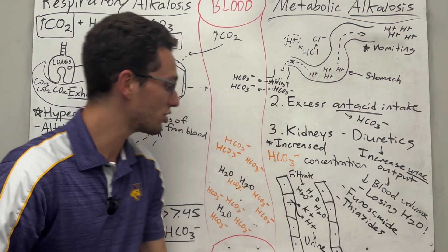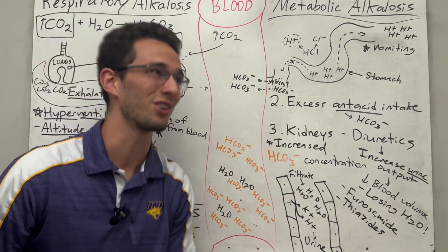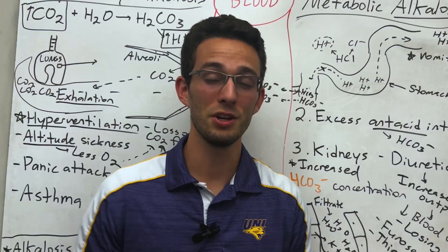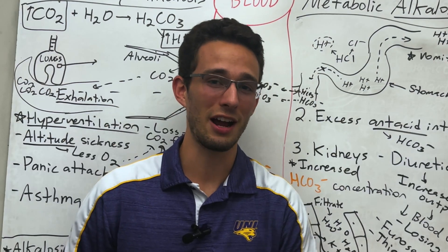So that's two ways that diuretics could cause metabolic alkalosis. Be sure to like and subscribe if this was helpful.